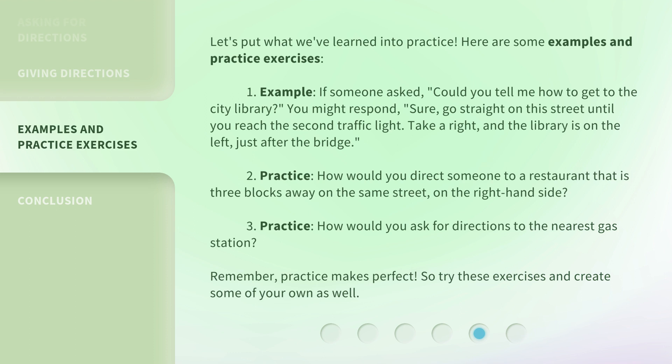Let's put what we've learned into practice. Here are some examples and practice exercises. 1. Example: If someone asked, "Could you tell me how to get to the city library?" you might respond, "Sure, go straight on the street until you reach the second traffic light. Take a right, and the library is on the left, just after the bridge." 2. Practice: How would you direct someone to a restaurant that is three blocks away on the same street, on the right-hand side? 3. Practice: How would you ask for directions to the nearest gas station? Remember, practice makes perfect — try these exercises and create some of your own as well.